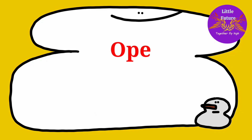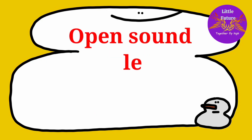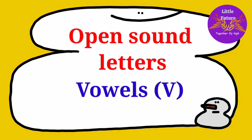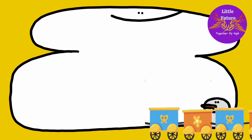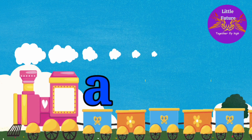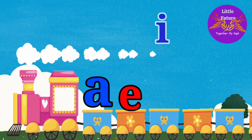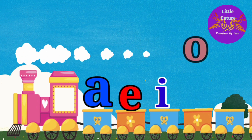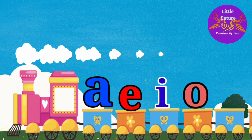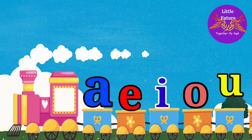Open sound letters are vowels. The 5 vowels are A, E, I, O, U.